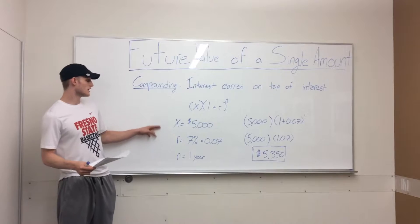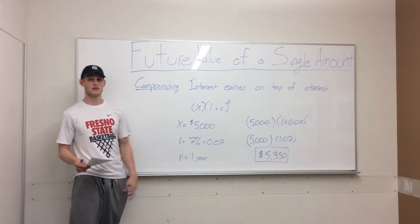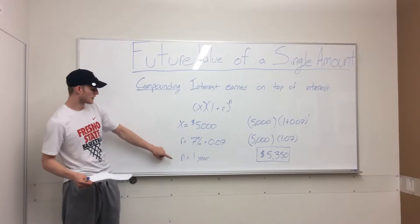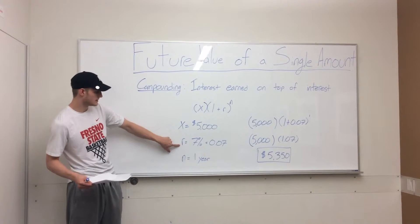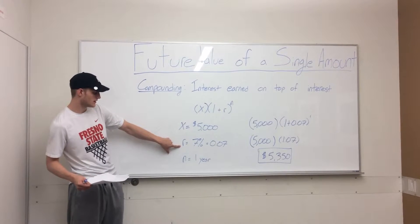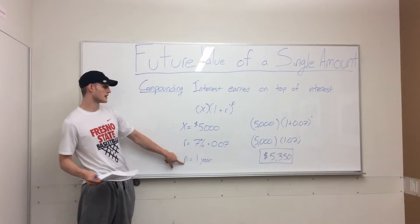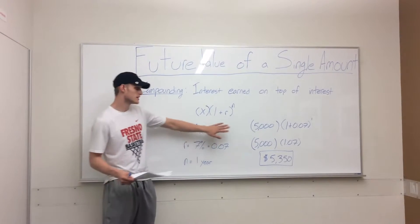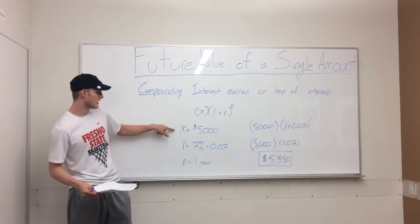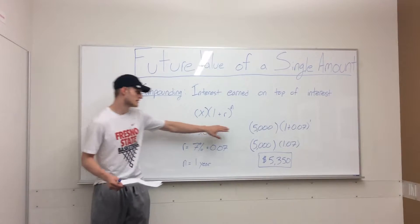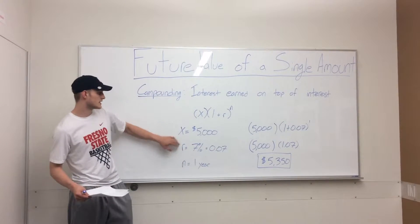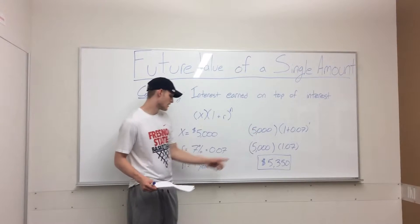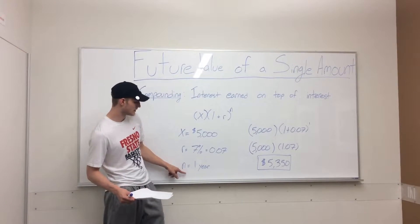When dealing with the future value of a single amount in one year, we're going to use this formula. For one year, our rate of return is 7%, our number of periods is one year, and our initial investment is $5,000. Plugging in, we have X equals $5,000, the rate of return is 7% converted to a decimal, and our number of periods is one year.